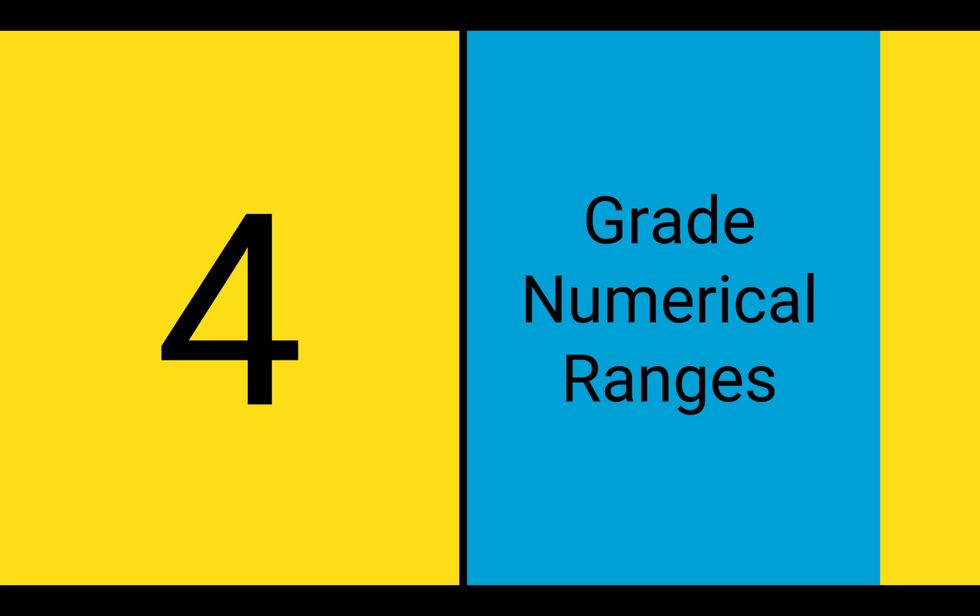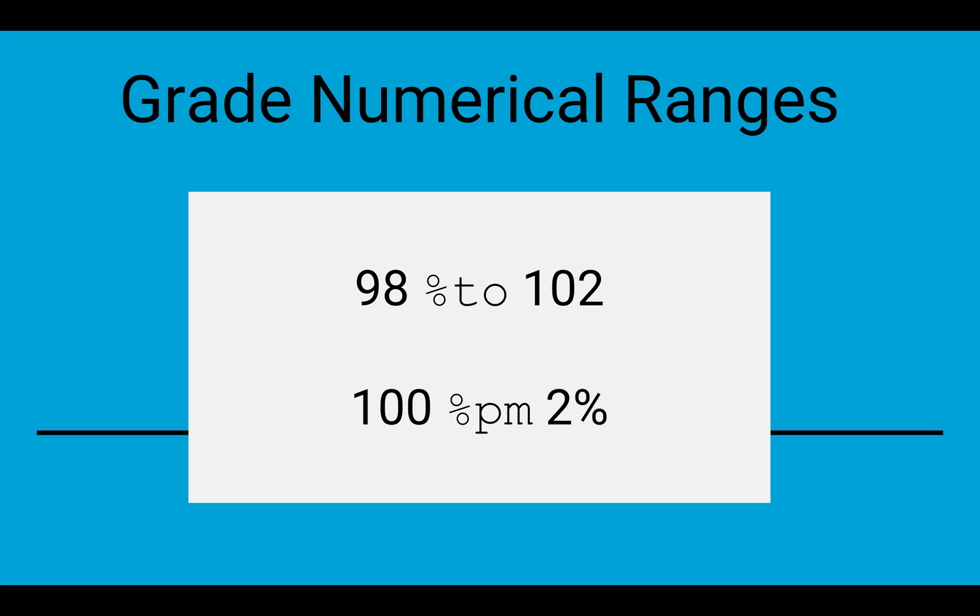Grade numerical ranges. Using Fluberoo to grade math and science assignments and want to allow for a little bit of wiggle room in your answer? No problem. You can set an upper and lower bound using the %2 or %pm for plus minus modifiers in your answer key. In this case, answers from 98 to 102 would be correct and anything outside that range would be incorrect.